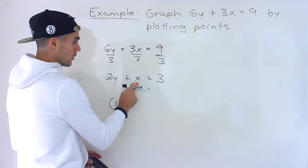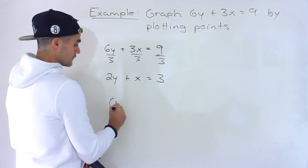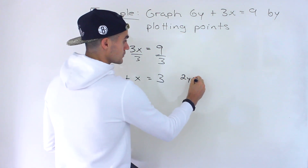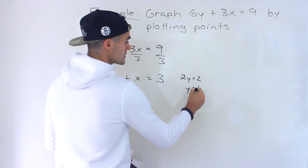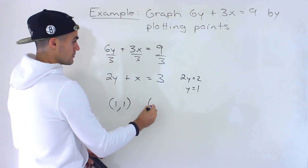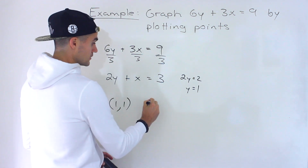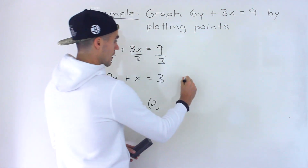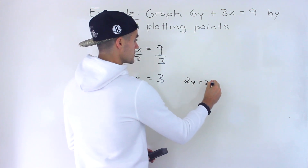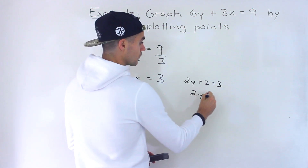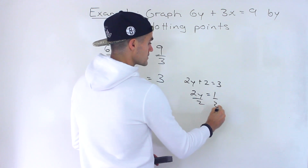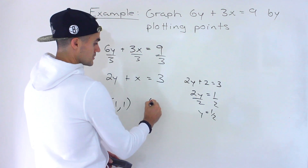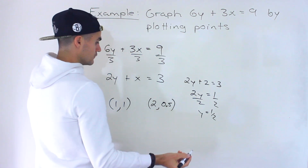From here you just pick x values. If we pick x equals 1, we get 3 minus 1 which is 2, so 2y equals 2, meaning y equals 1. Or if we pick x equals 2, we get 2y plus 2 equals 3, bring the 2 over, 2y equals 1, divide both sides by 2, y equals 1 over 2. So that point is (2, 0.5).